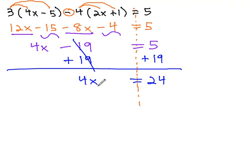Finally, we can get the x alone. Right now, it's 4 times x by dividing both sides by 4 to get x equals 6.